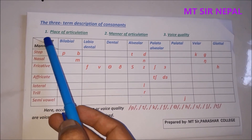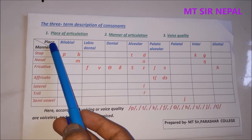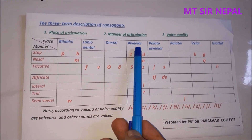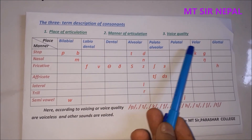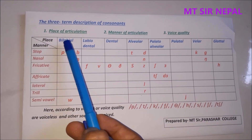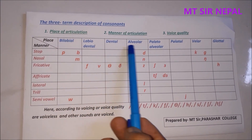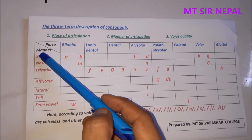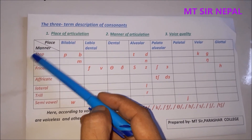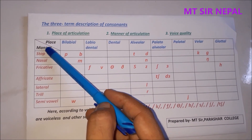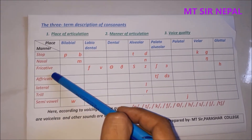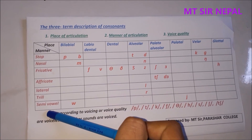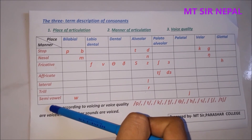For place of articulation, the categories are: bilabial, labiodental, dental, alveolar, palatal, alveolar-palatal, velar, and glottal. For the third criteria, manner of articulation, the categories are: stops, nasal, fricative, affricate, lateral, trill, and semivowel.